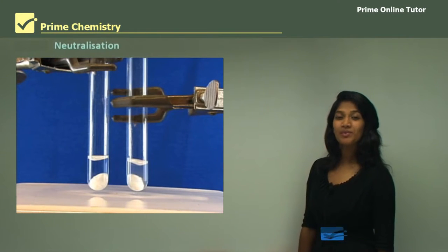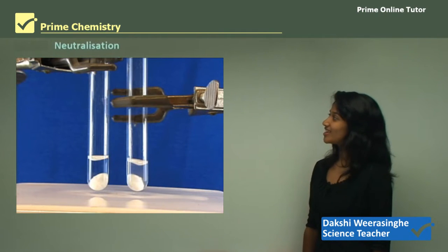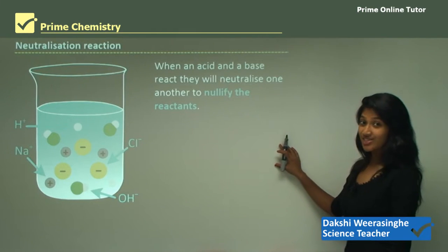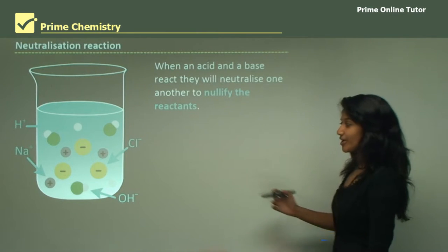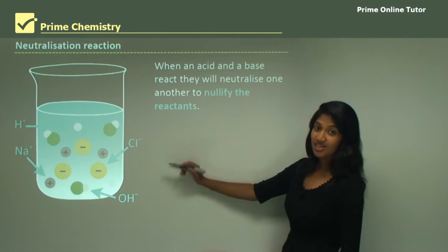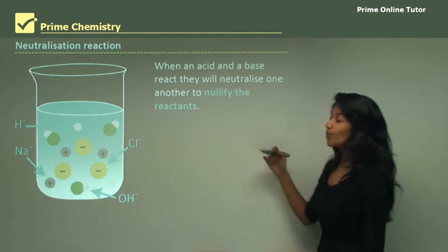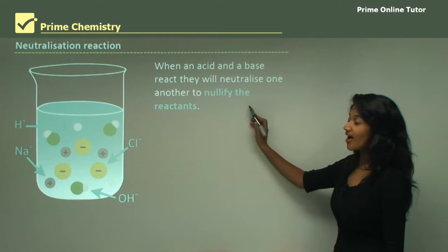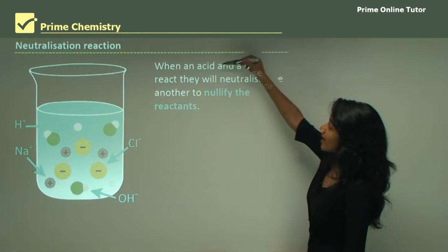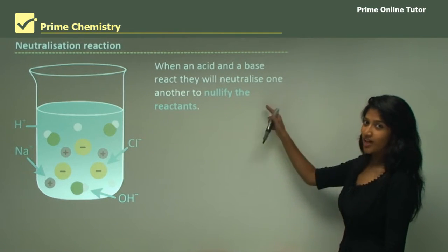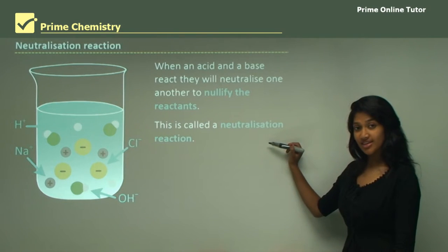Hello everyone. Today we'll be learning about neutralization reactions. A neutralization reaction is a reaction between an acid and a base — for example, hydrochloric acid with sodium hydroxide. What they do is nullify the reactants, so a base and an acid react to nullify each other, and it's called a neutralization reaction.